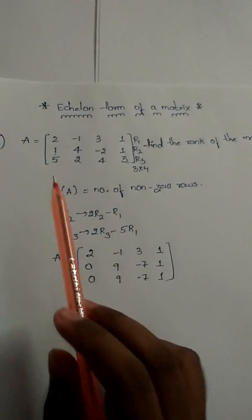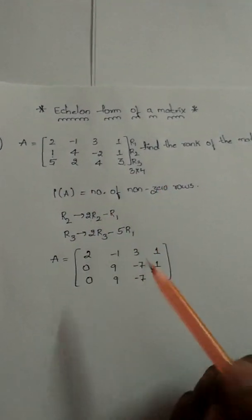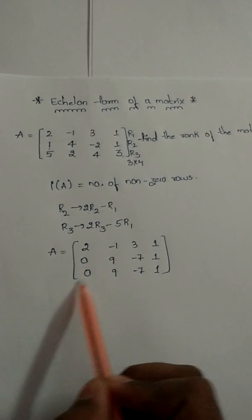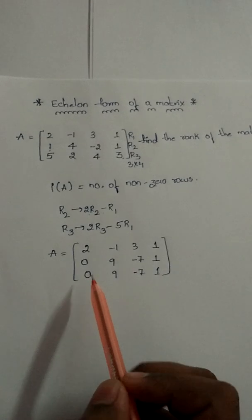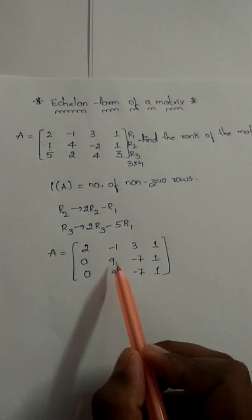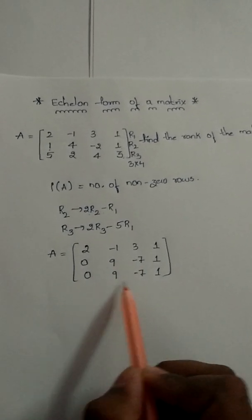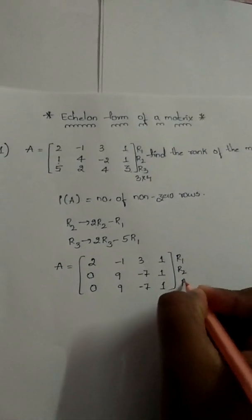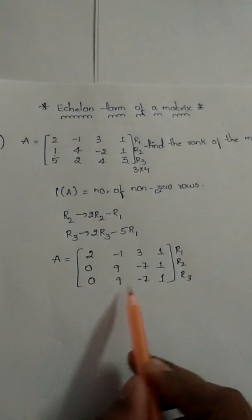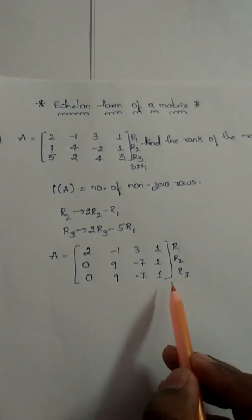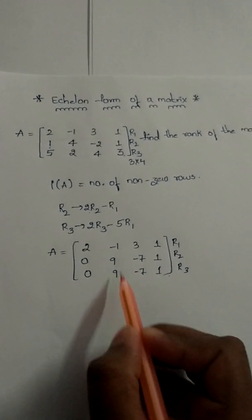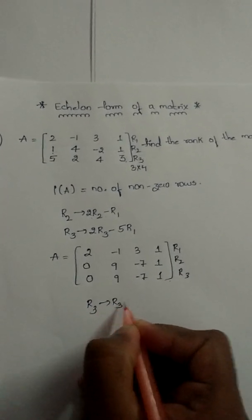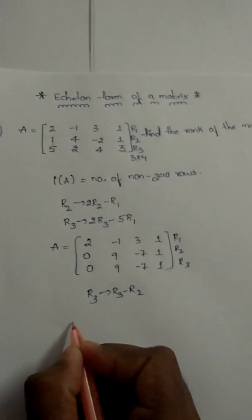Our aim is to make row elements zero — we have made the second and third row first column elements zero. Next, we try to make R3 totally zero by applying R3 → R3 − R2.